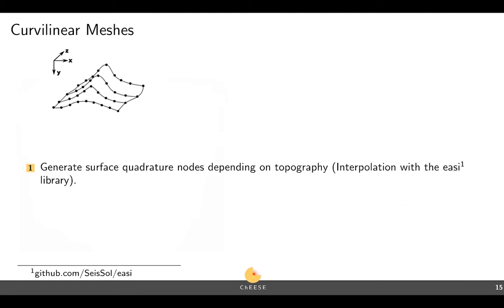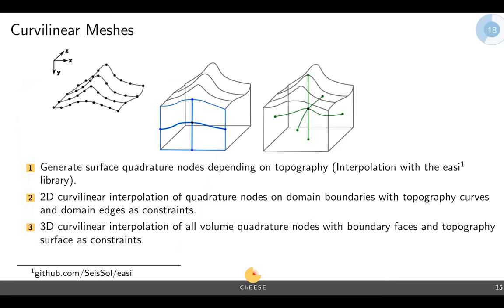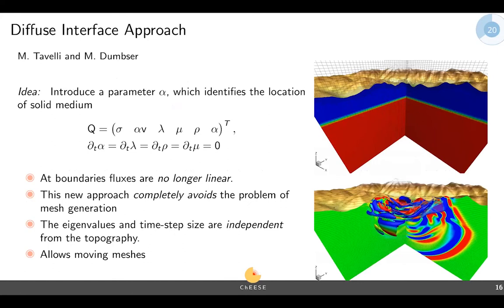Here's the modification of the flux — J is the Jacobian. We've just multiplied it in here all over the place, and that's everything we need to do; we change this and then we have the curvilinear mesh we want. To do this, we start by generating quadrature nodes depending on the topography. We interpolate these using the EASI library, which you can find on GitHub and which ExaHyPE has an interface to if you want to read in mesh data. Then we introduce a 2D curvilinear interpolation of the quadrature nodes on the boundaries, then extend this into 3D, and from the whole transformation we generate a Jacobian at each quadrature point. That's what we put back into our equation to solve.